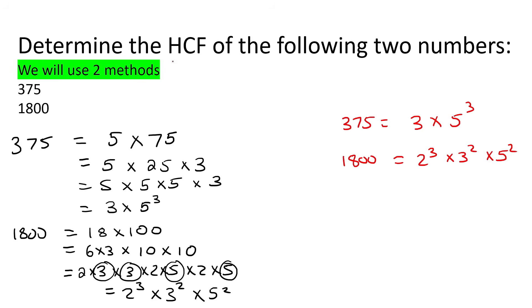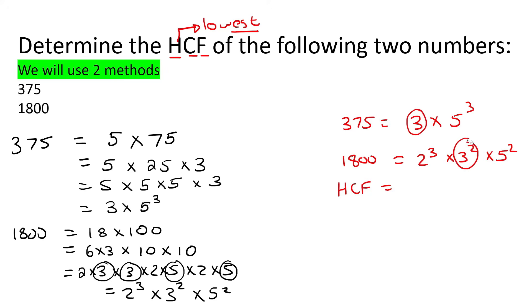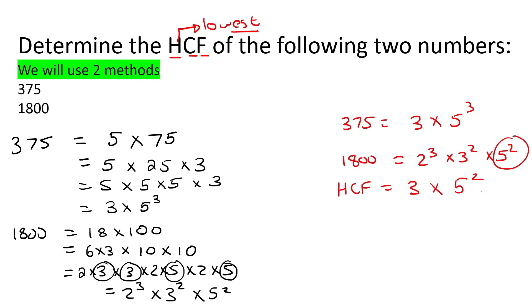Now remember when doing highest common factor with this method, find the lowest for each — but there's a catch. If you look at the 2s: only 1800 has a 2, and 375 doesn't. So when writing your HCF, you will not choose any of the 2s. Moving on to the 3s: the smallest is just 3 to the 1 from 375. For the 5s: the smallest is 5 to the 2 from 1800. So the HCF = 3 times 5 to the 2, which gives you 75.